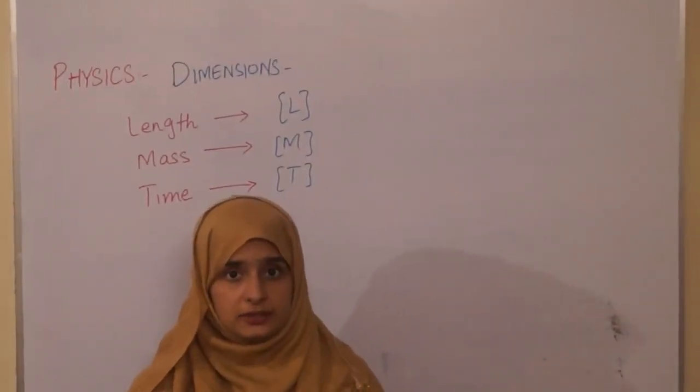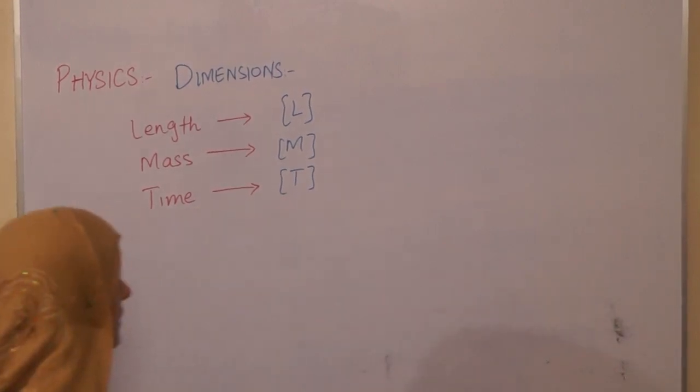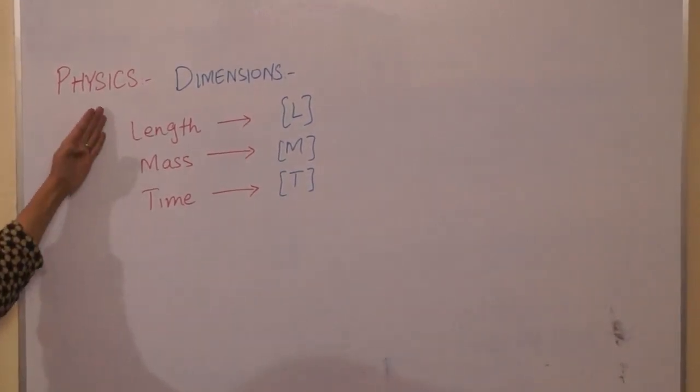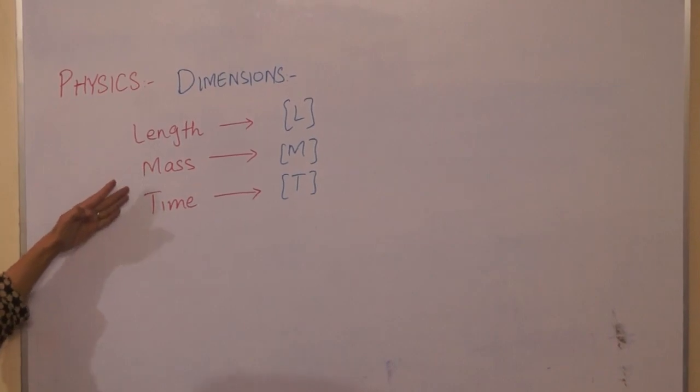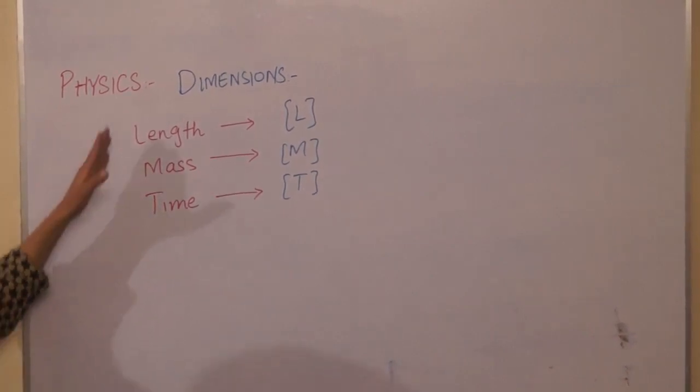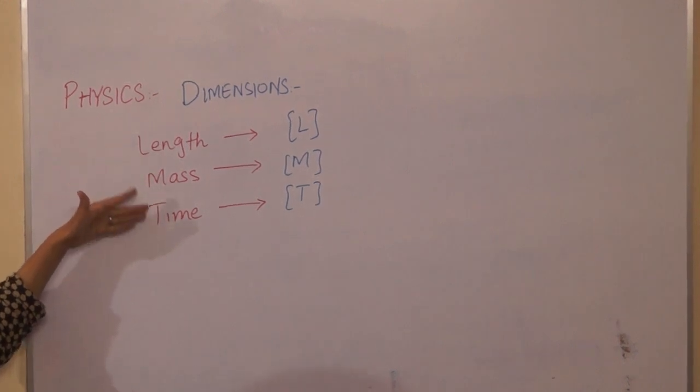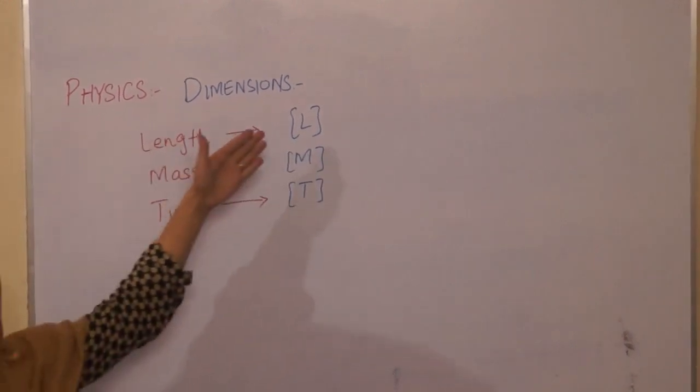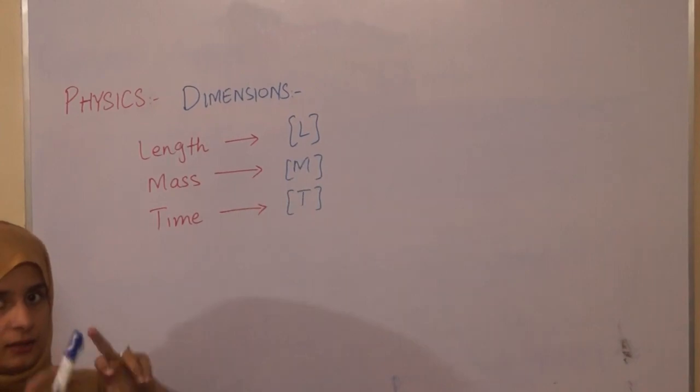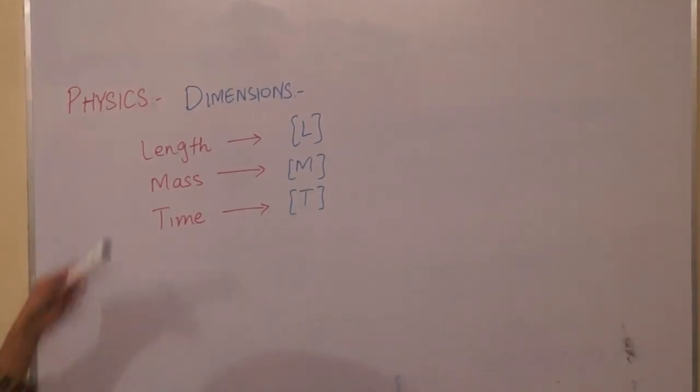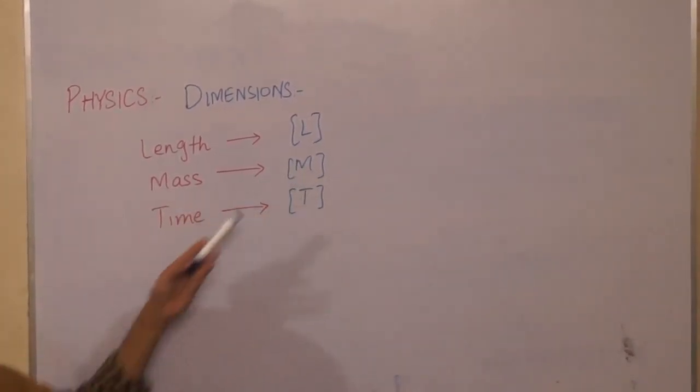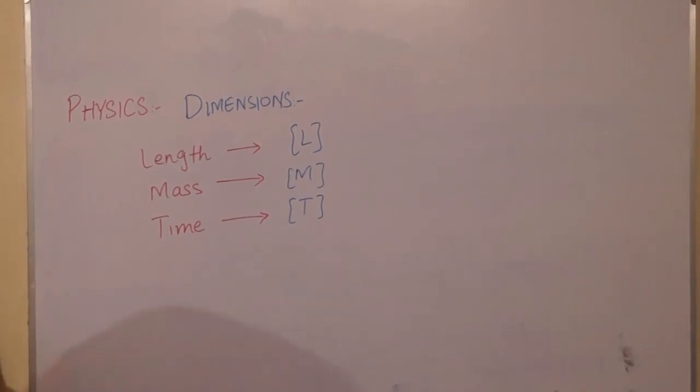Students, today we are going to learn about the topic of dimensions. As you see on the board, there are three basic terms which are used for dimensions: length, mass, and time. We denote length with L in square brackets, mass with M in square brackets, and time with T.